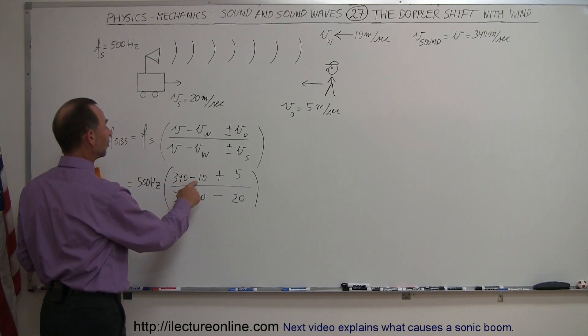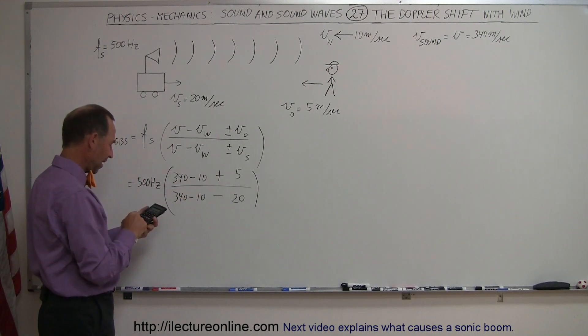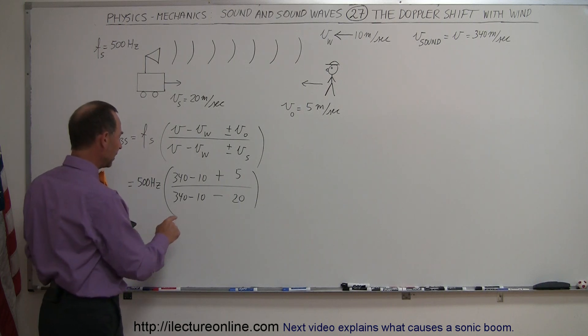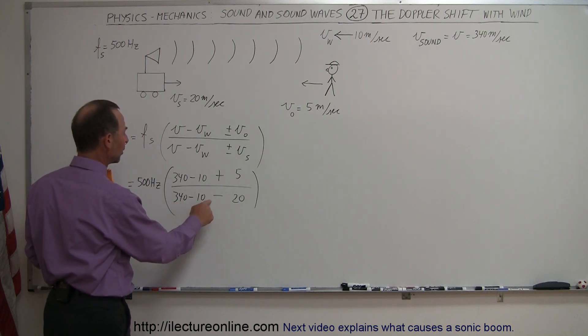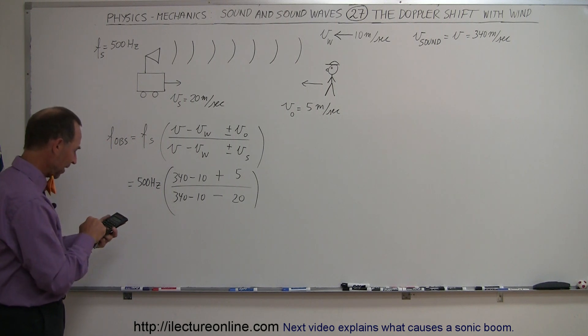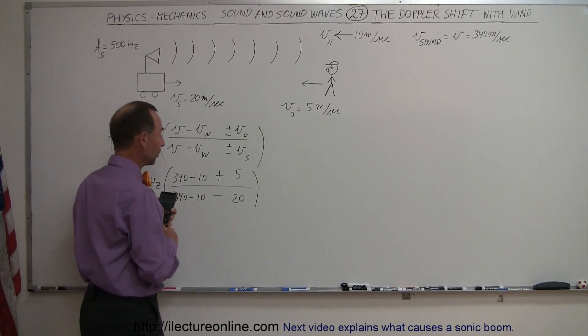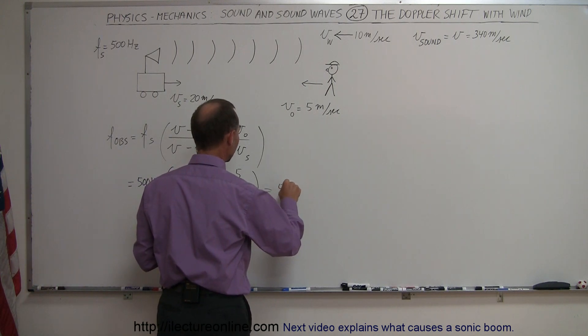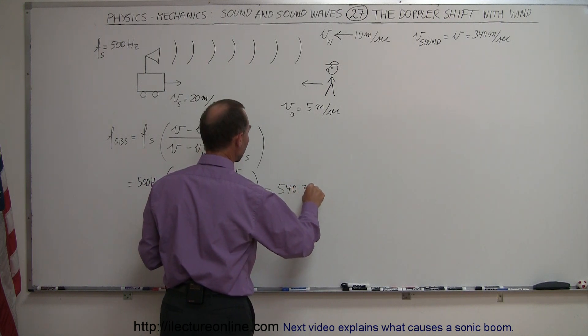So 340 minus 10 is 330, plus 5 is 335, divided by 340 minus 10 is 330, minus 20 is 310. We multiply times 500 and we get 540.3 Hertz.